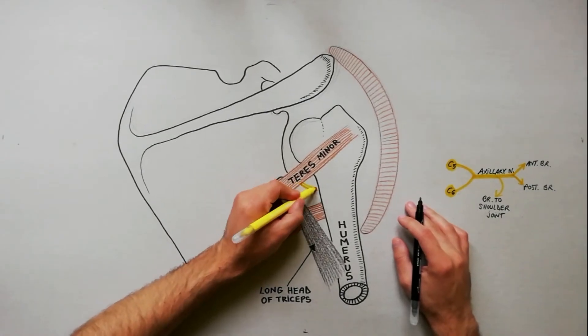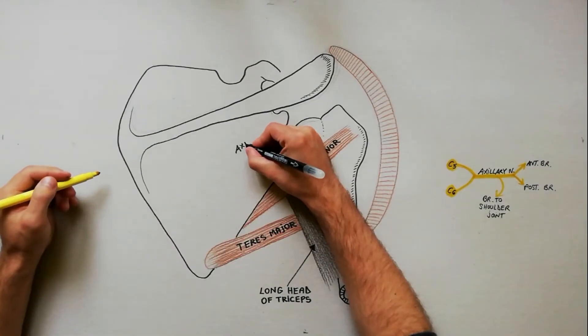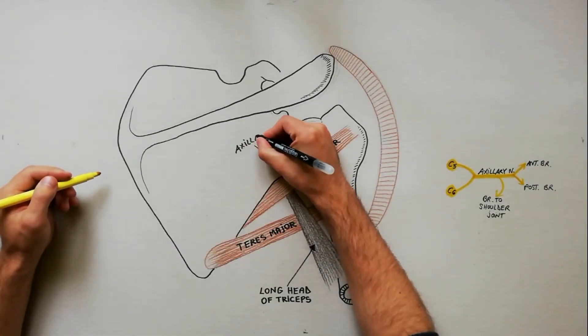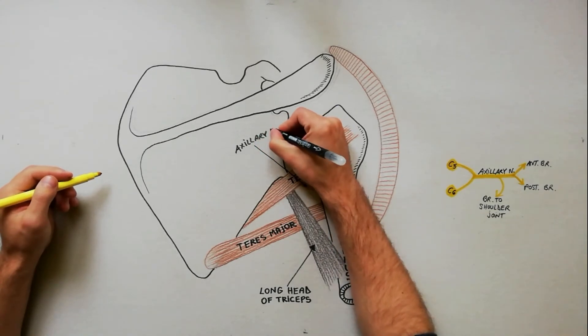The axillary nerve leaves the axilla, passing through the quadrangular space to be intimately related to the surgical neck of humerus.